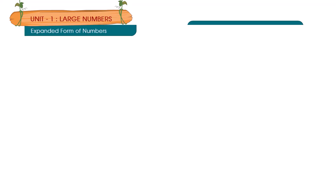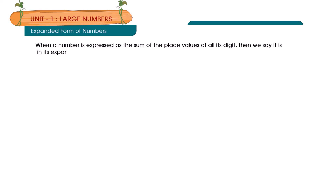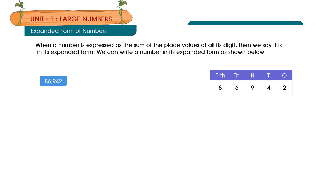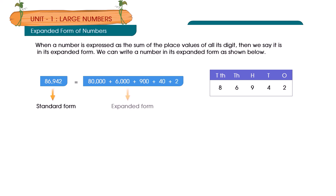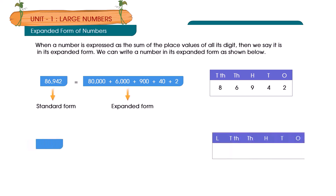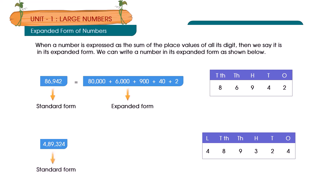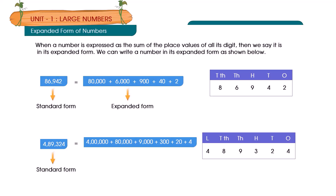Expanded Form of Numbers. When a number is expressed as the sum of the place values of all its digits, we say it is in its expanded form. For example: 86,942 in standard form is 80,000 plus 6,000 plus 900 plus 40 plus 2 in expanded form. 4,89,324 in standard form is 4,00,000 plus 80,000 plus 9,000 plus 300 plus 20 plus 4 in expanded form.